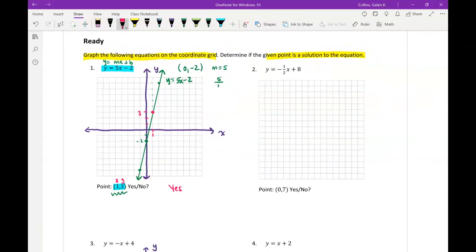What that also means is that if I plug in 3 for y and 1 for x into my equation, I get a true statement. Since 5 minus 2 is in fact 3.